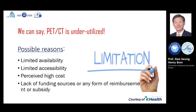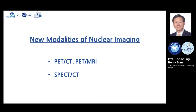Possible reasons for underutilization include limited availability, limited accessibility, perceived high cost, and lack of funding sources or any form of reimbursement or subsidy. The nuclear medicine community is actively working to solve these problems. As I have presented, FDG PET-CT is the foremost nuclear imaging modality in oncology. But we also have other new imaging modalities such as PET-MRI and SPECT-CT. Let me briefly summarize the technical development of these new modalities.